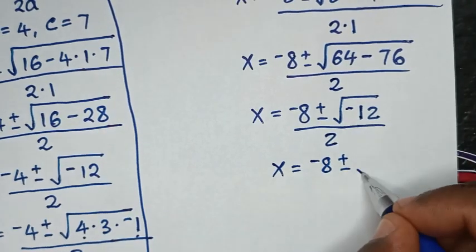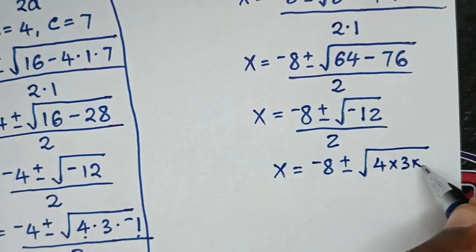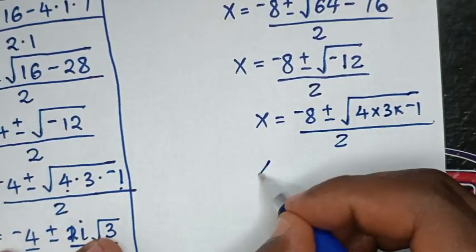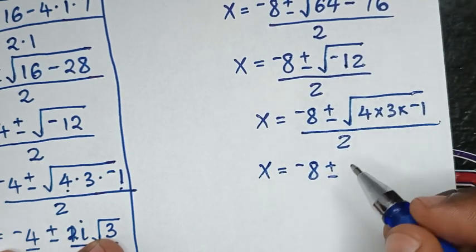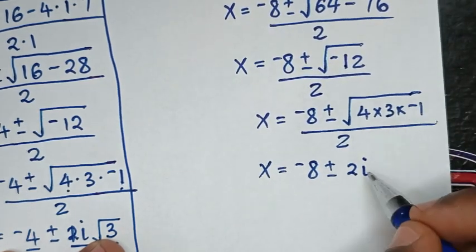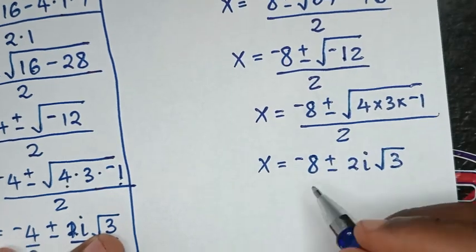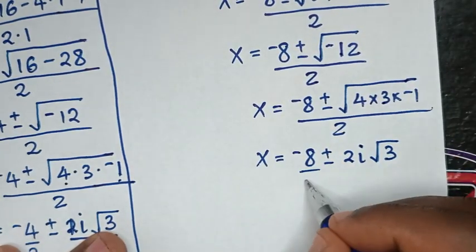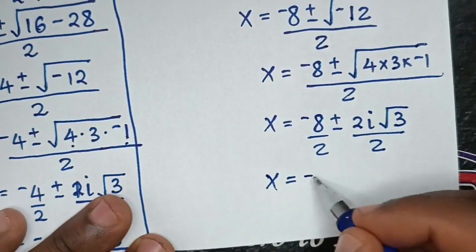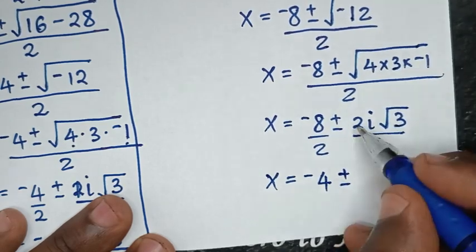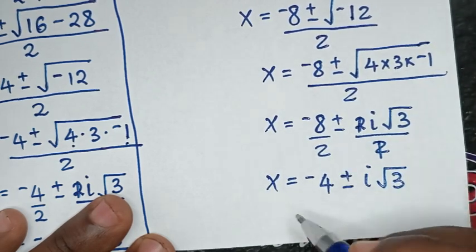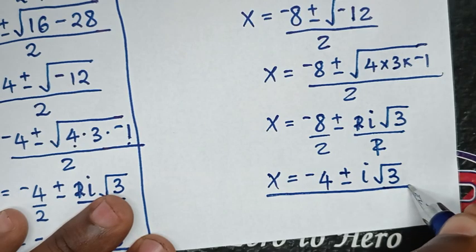That gives x = -8 ± √(-12) over 2. We rewrite √(-12) as √(4·3·(-1)) = 2·i·√3. Dividing by 2: -8/2 = -4, and the 2 cancels leaving i√3. So we have two complex solutions: x = -4 + i√3 and x = -4 - i√3.